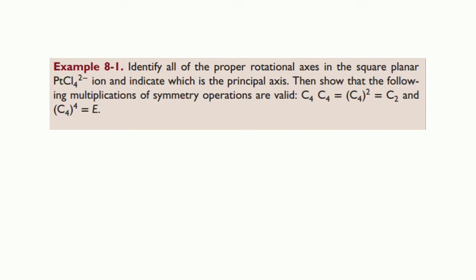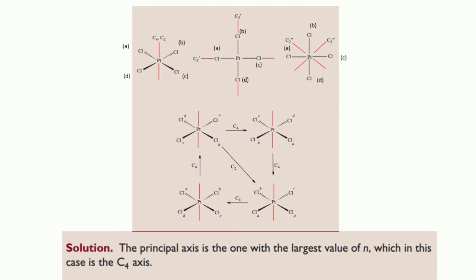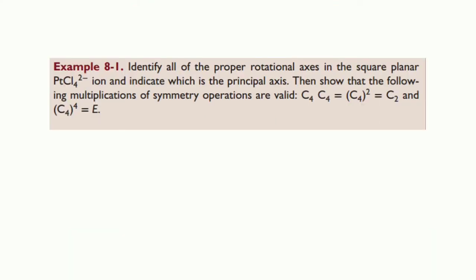For C2 rotation along the same axis, atom c occupies position a and d occupies position b. There are also C2′ axes that intersect through the atoms, and C2″ axes that bisect the bonds. The axis with the largest value of n is C4, so C4 is the principal axis. The problem also asks us to show that C4 × C4 = C4² = C2, and C4⁴ = E (identity).